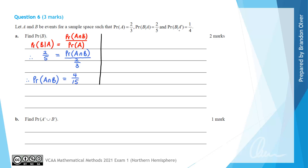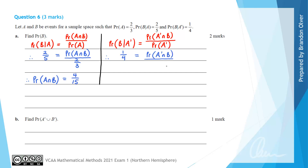Next, we'll do the same thing for the other conditional probability given. The probability of B given A complement equals the probability of A complement intersecting B divided by the probability of A complement. So 1/4 equals the probability of A complement intersecting B divided by the probability of A complement. Since the probability of A is 2/3, the complement is 1/3. Therefore, the probability of A complement intersecting B equals 1/4 times 1/3, which is 1/12.